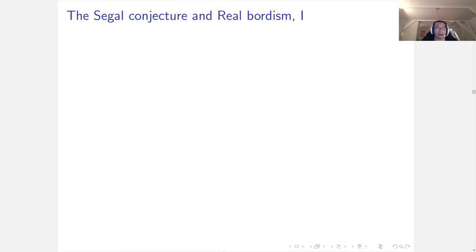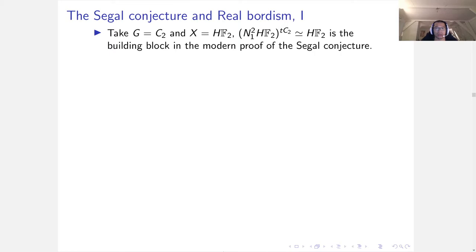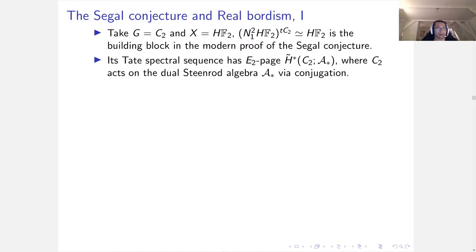Now I'm going to talk about my research. Taking G equals C_2, X is HF2. The Tate spectrum of the norm is HF2 itself. However, its Tate spectral sequence is very complicated. The E_2 page is the Tate cohomology of the conjugate Galois action on the dual Steenrod algebra. Except for the point (0,0), everything kills each other by mysterious differentials.